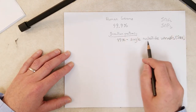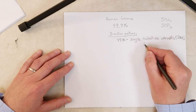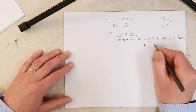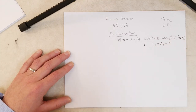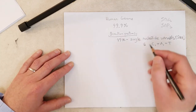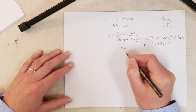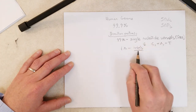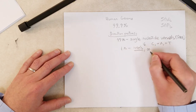SNVs are pretty self-explanatory: if someone has a G at one position, another person might have a C, an A, or a T. That's a single nucleotide variant. One percent of the differences are what we call indels — insertions or deletions relative to the reference.